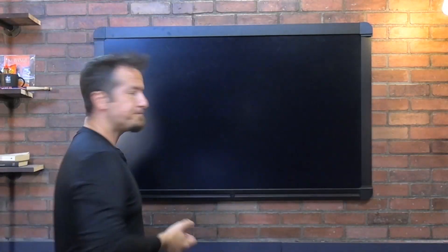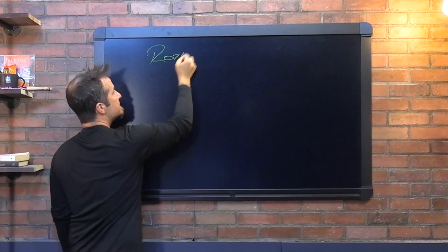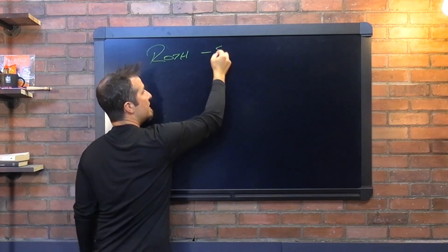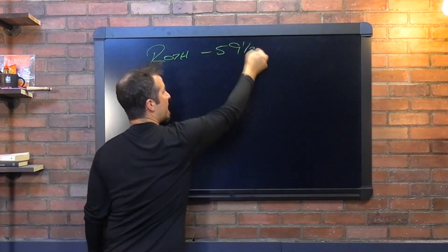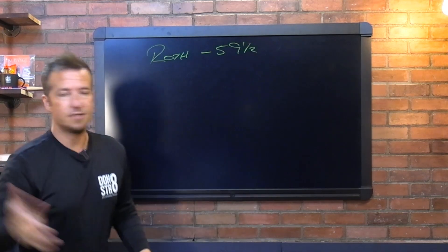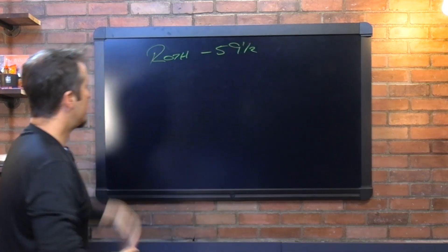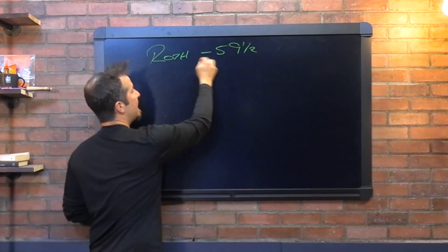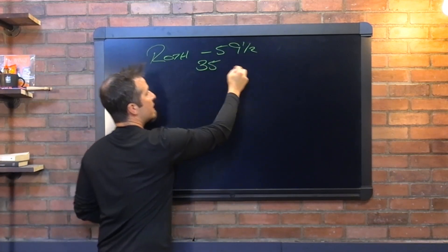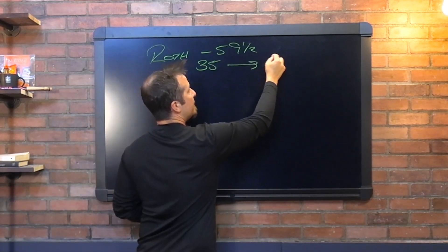All right, so let's go over to the old board. So this is for early withdrawals. Again, this is if you are sub-59.5, at least initially, and then we'll get into the rest of it there.